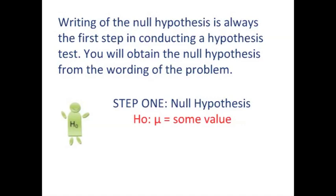Writing of the null hypothesis is always the first step to conducting a hypothesis test. You will obtain the null hypothesis from the wording of the problem. Now I gave you two examples before, but you would read your problem, looking to see what the claim is. And that's step one, the null hypothesis. And the null hypothesis is going to be H₀, it will be worded that way, that μ equals some value. And that value will be obtained from the wording of the problem that you read.